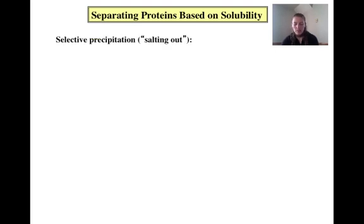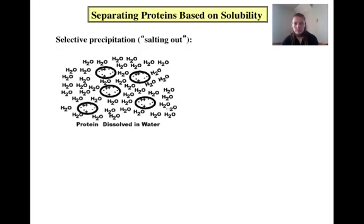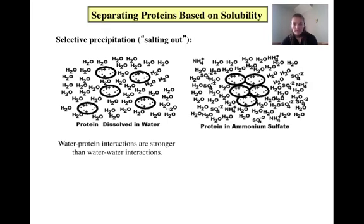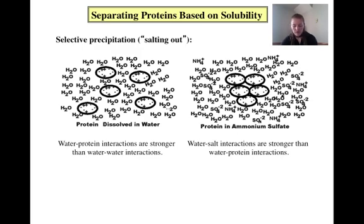We can selectively precipitate proteins from a solution by making them insoluble. As you can see here, the small ovals represent proteins that are dissolved in water. Solubility occurs because the interactions between the water and the proteins are stronger than the interactions between the water molecules themselves, so the water molecules surround the proteins, making them soluble. However, adding ammonium sulfate, a salt, to the mixture makes the proteins clump together and become insoluble, because the interactions of the water with the salt are stronger than with the proteins. As a result, the salt effectively pulls the water away from the proteins, leaving them to cluster together and precipitate out of the solution.